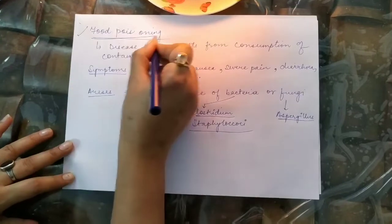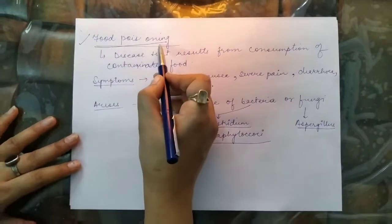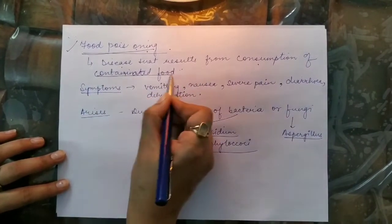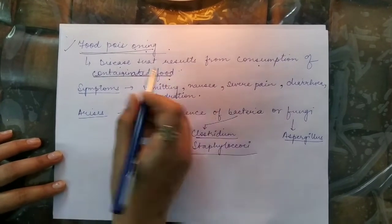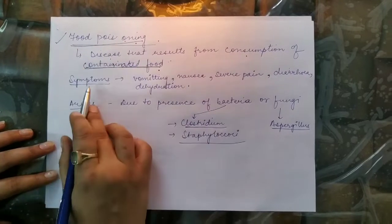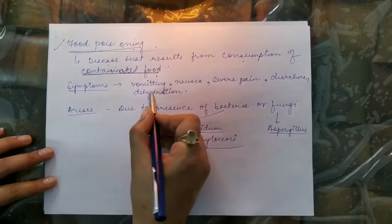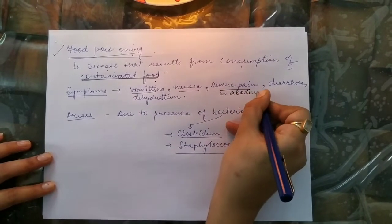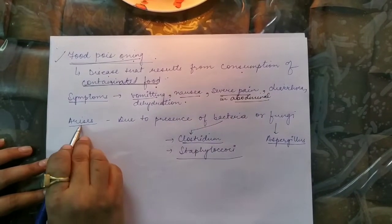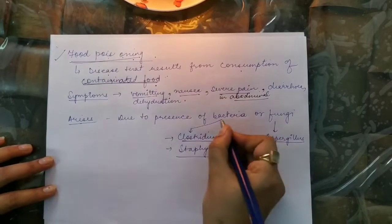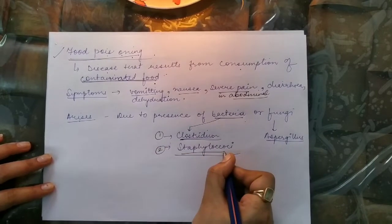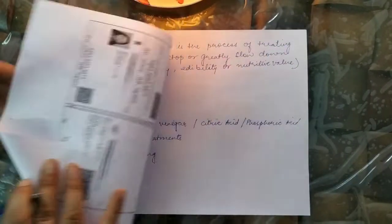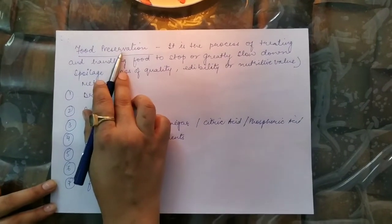Food poisoning is a disease resulting from the consumption of contaminated food. It is particularly common in summer and rainy months. Symptoms include vomiting, nausea, severe pain in the abdominal region, diarrhea, and dehydration. Two bacteria — Clostridium and Staphylococci — can cause food poisoning, and one fungus, Aspergillus, is also reported to cause food poisoning in human beings.